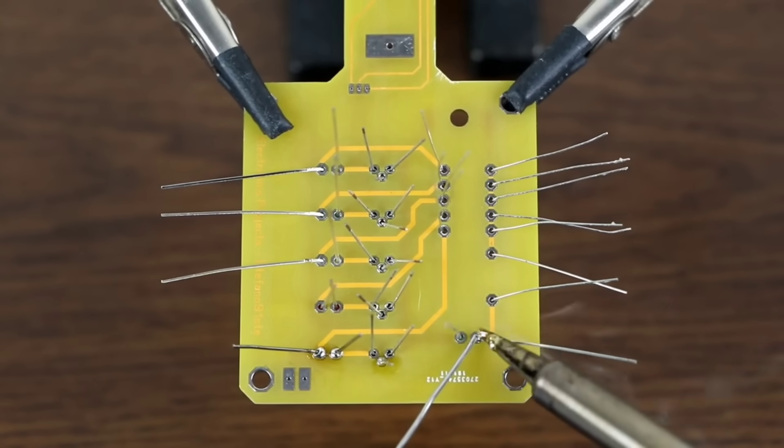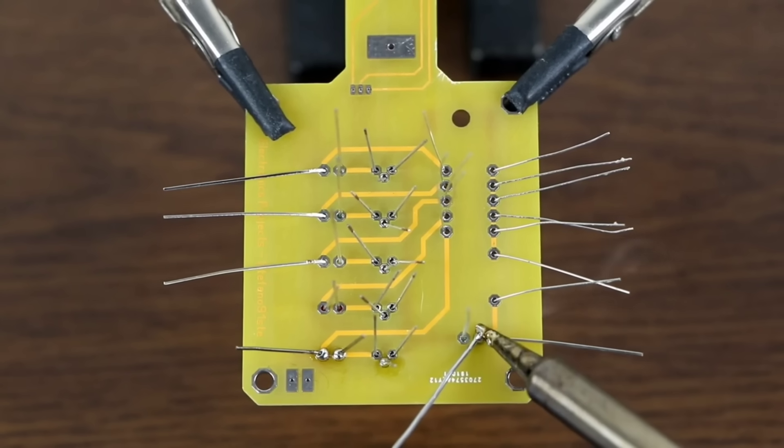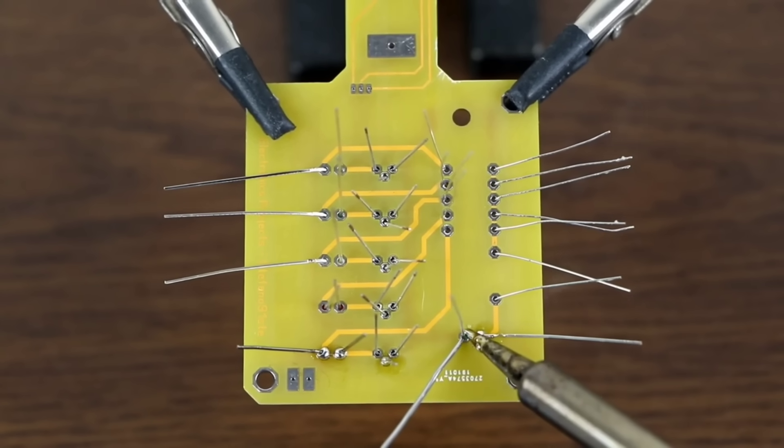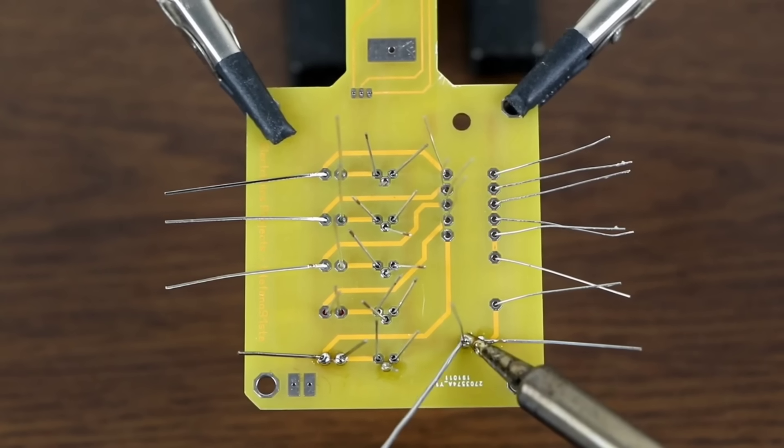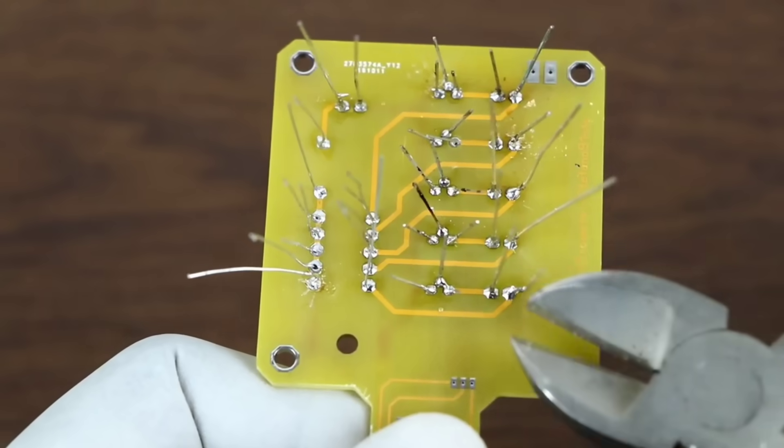The soldering needs to be done slowly and neatly so that none of the components become loose from their position. Make sure the joints are clean, shiny, and firmly bonded to the pads.